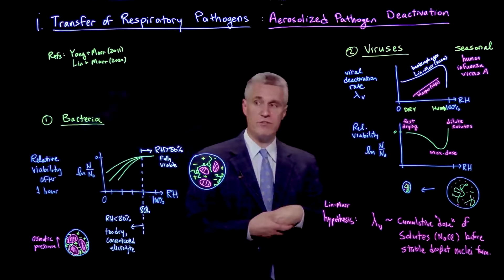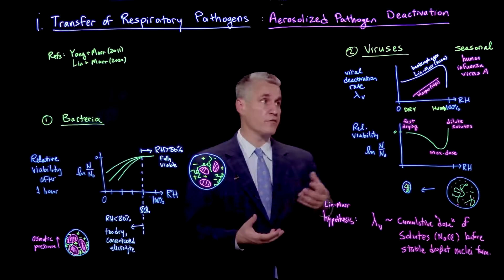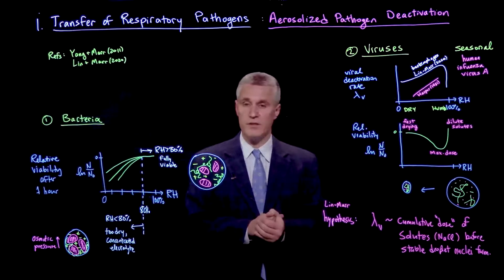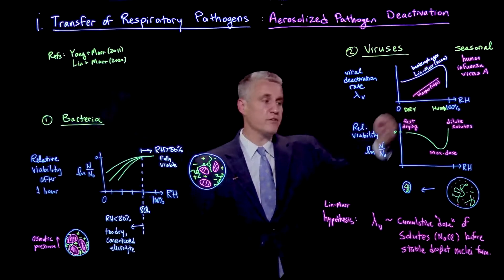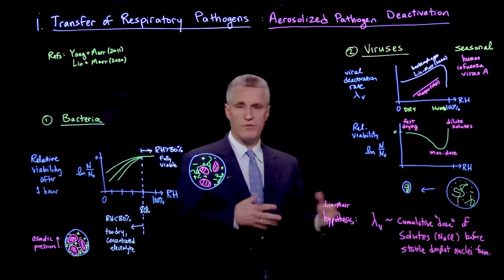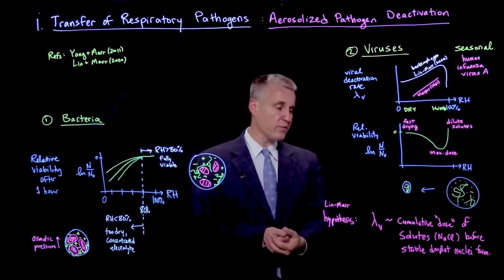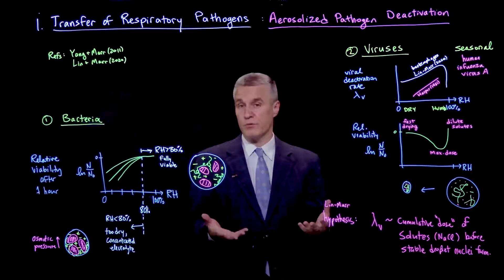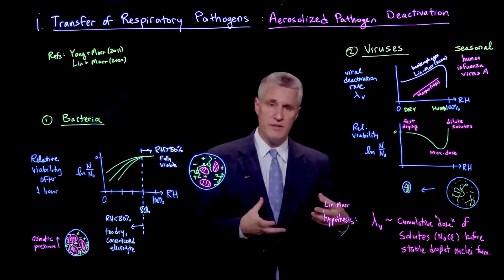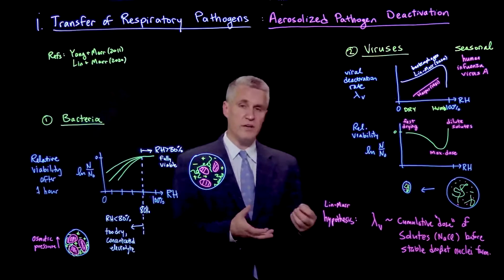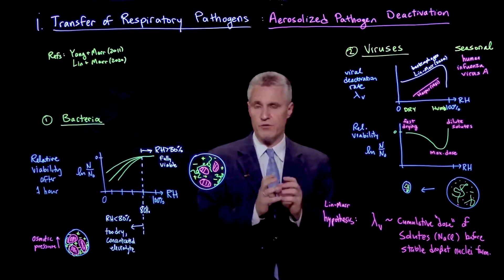If we convert the deactivation rate into a relative viability again, we see an interesting dependence in recent experiments done using bacteriophages, which are models of different kinds of human pathogens, including seasonal flu and influenza viruses. In particular, it was a non-monotonic dependence, where there's a maximum rate of deactivation around 60% to 80% humidity — meaning viability was lowest in that range. The authors proposed to explain this with a hypothesis that solutes present, such as sodium chloride or chloride ions, reach higher concentrations in shrunken droplets and create a stress on the virus. The key idea is that the cumulative dose or exposure to those solutes is what's important.